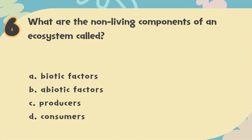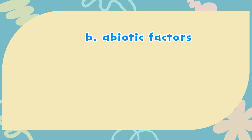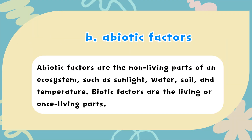The correct answer is B: Abiotic factors. Abiotic factors are the non-living parts of an ecosystem, such as sunlight, water, soil, and temperature. Biotic factors are the living or once-living parts.